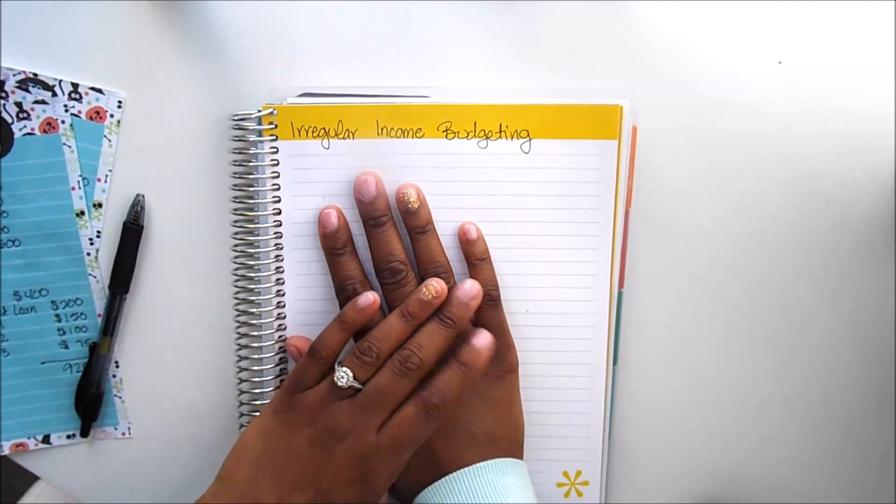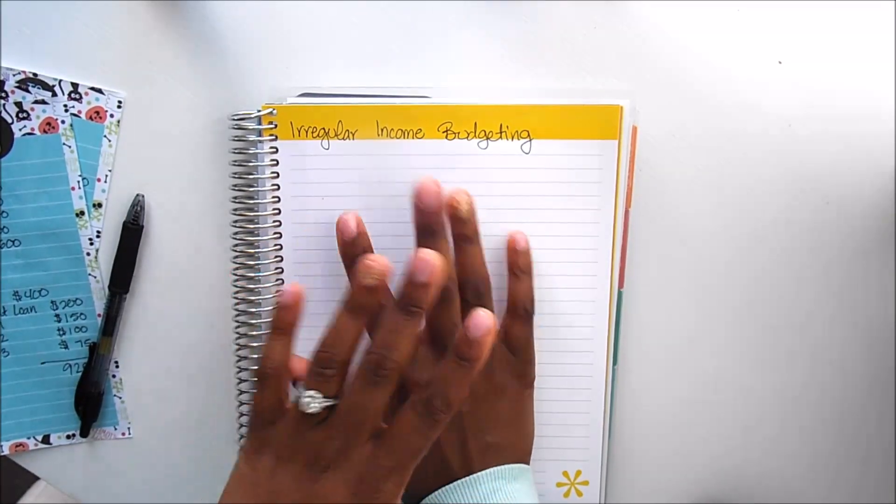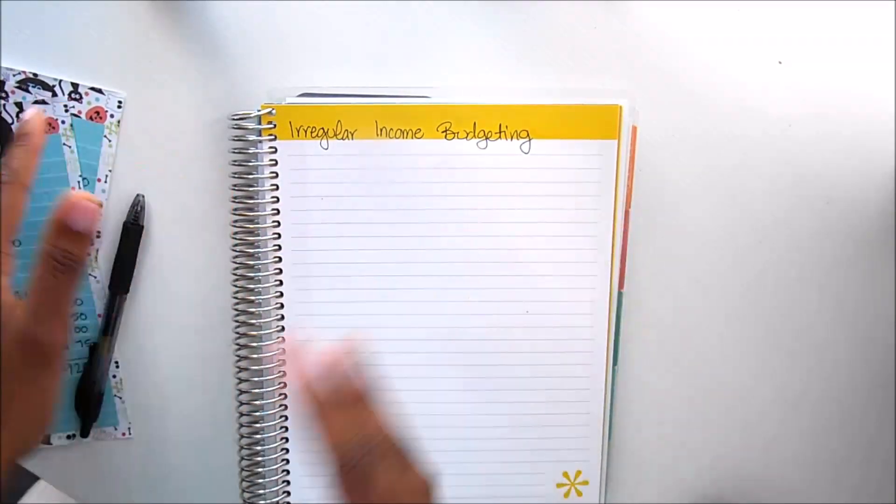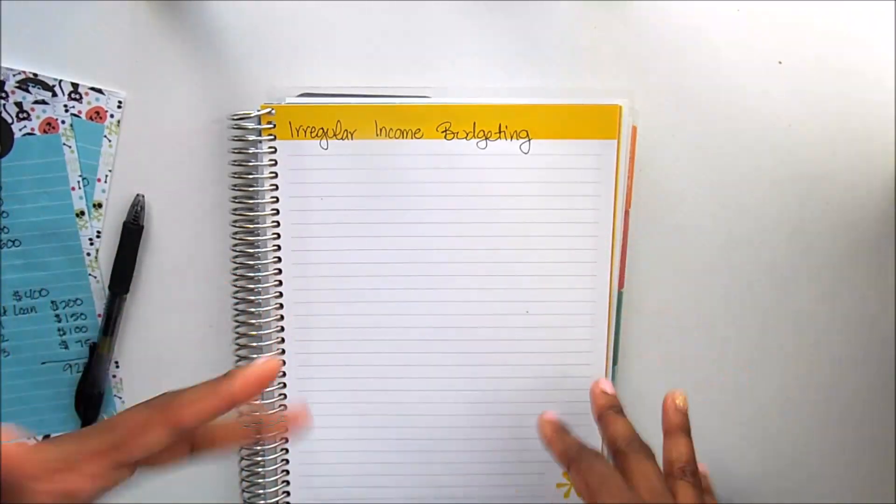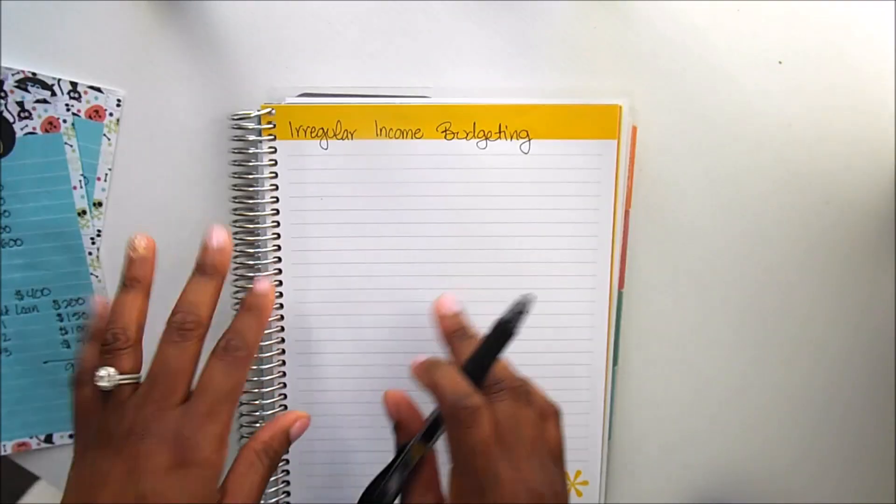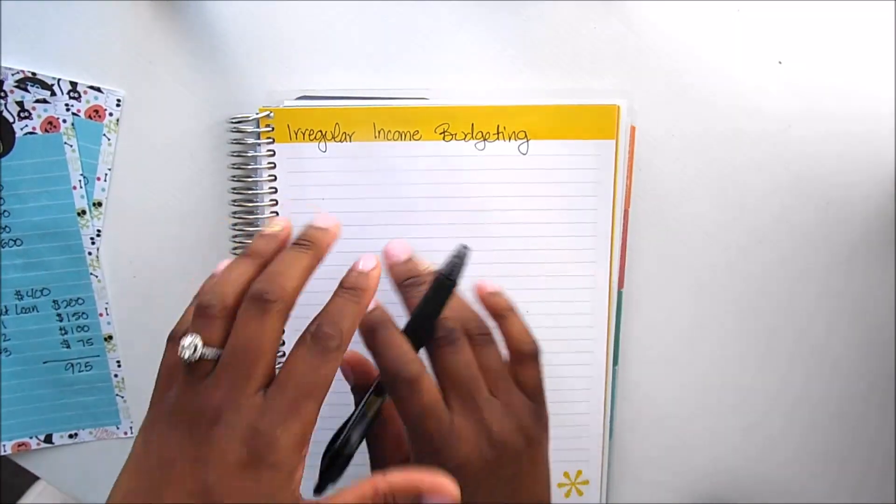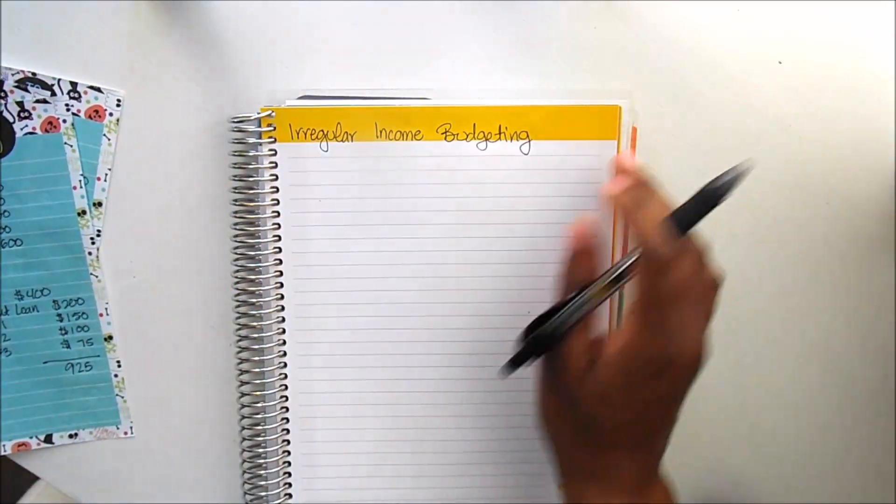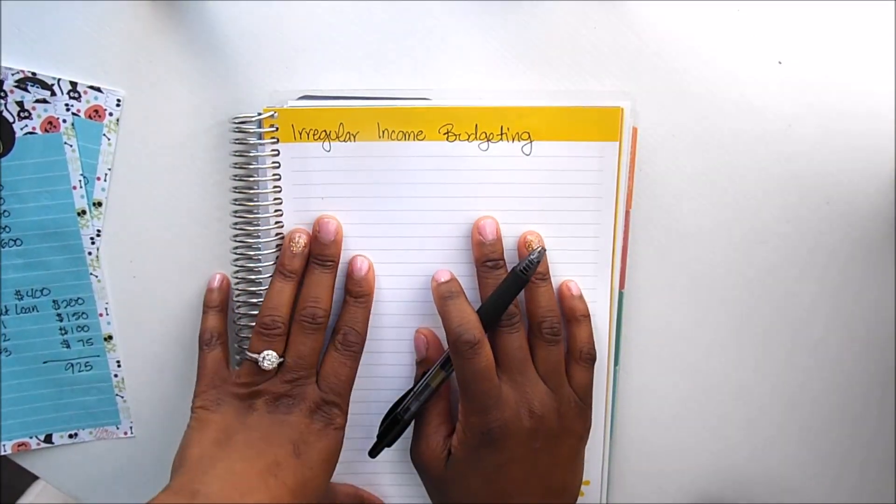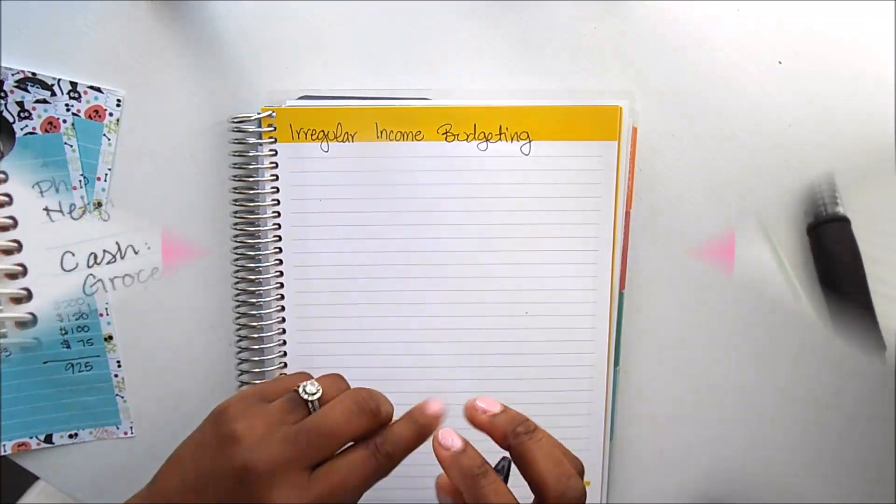So last Monday I shared with you guys five tips that I have that I use when budgeting with an irregular income, which ours is. And then for this week I promised that I would share a budgeting example. So I am going to do just that. Let's go ahead and get started.